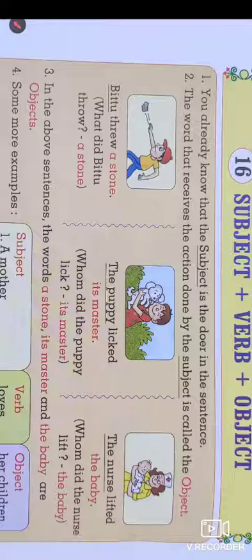Let's take that person's name as Bitto. 'Bitto threw a stone.' Here we come to know about the objects. Bitto is the subject and a stone is the object, because the activity of throwing is applied on the stone. The next sentence: 'The puppy licked its master' — here 'its master' is the object. 'The nurse lifted the baby' — the baby is the object. In these three sentences, a stone, its master, and the baby are objects.